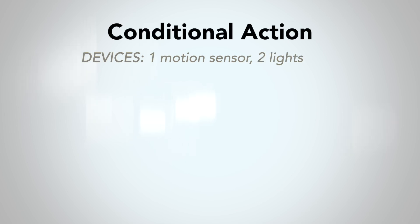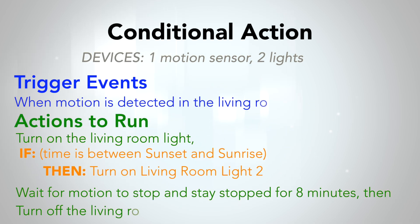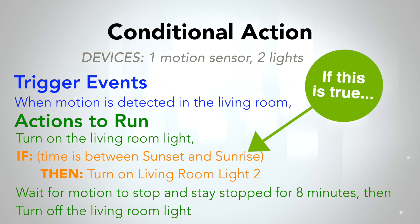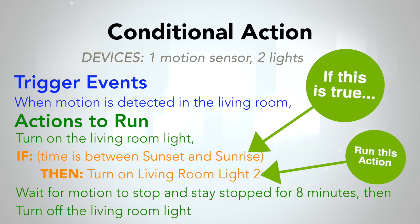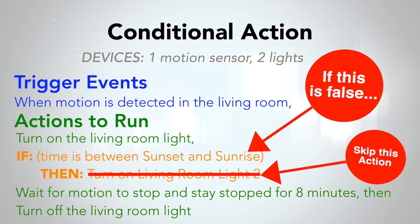In this case, the conditional action will be: if the time is between sunset and sunrise, then turn on the living room light two. When a rule reaches an if statement, it will evaluate the condition or conditions we define. If the condition is true, it will execute the action we tell it to. If the conditions don't match our if statement — that statement is false — the rule will not execute the then action.